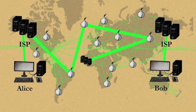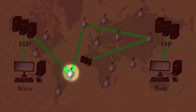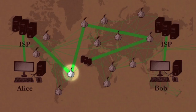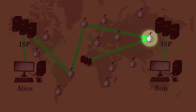At most, your ISP sees a connection to the first relay but doesn't know where you're going from there. The website you visit sees that there is a connection coming from the last relay, but doesn't know who you are.